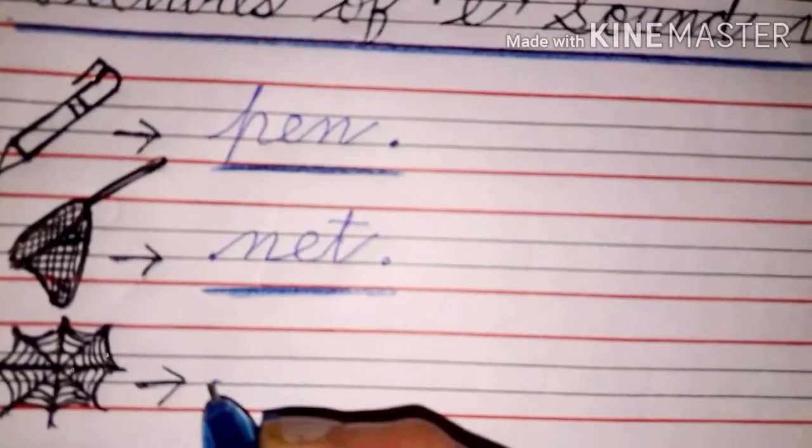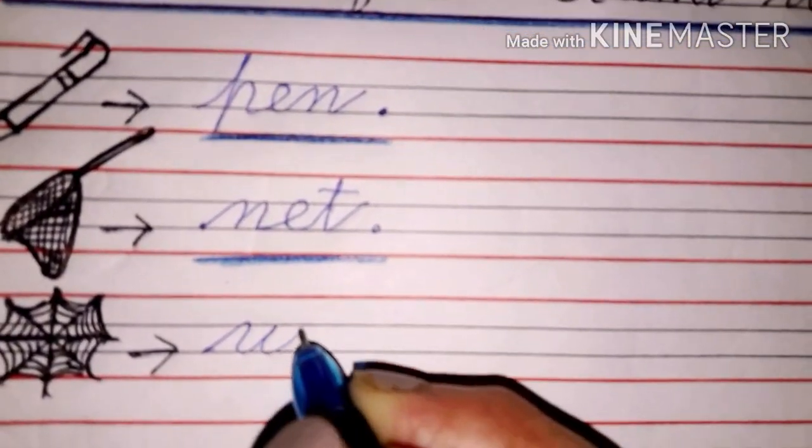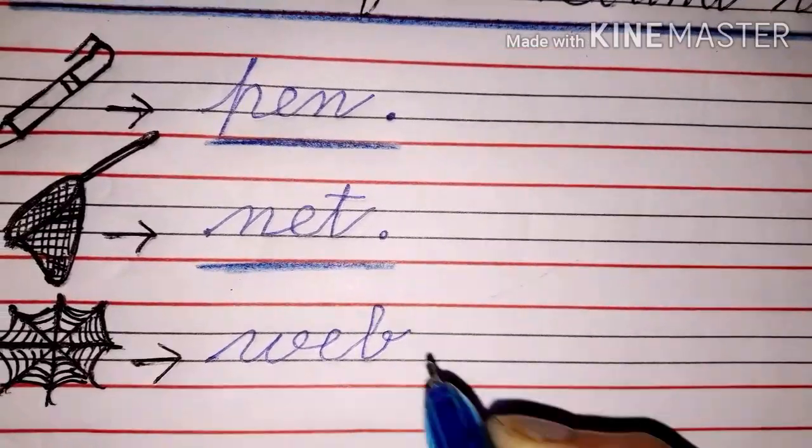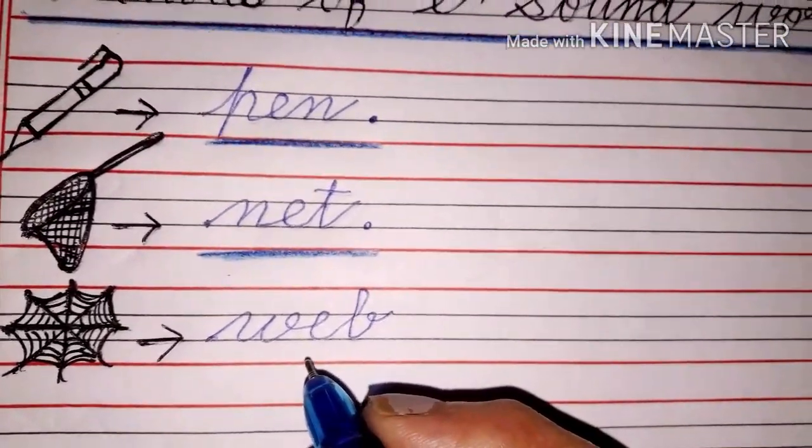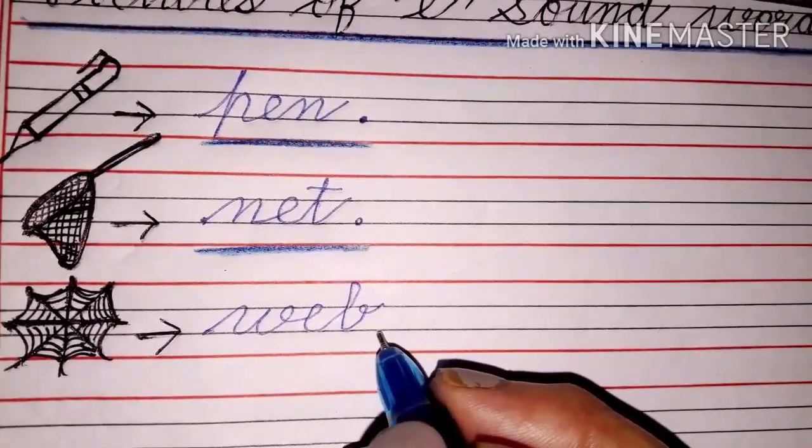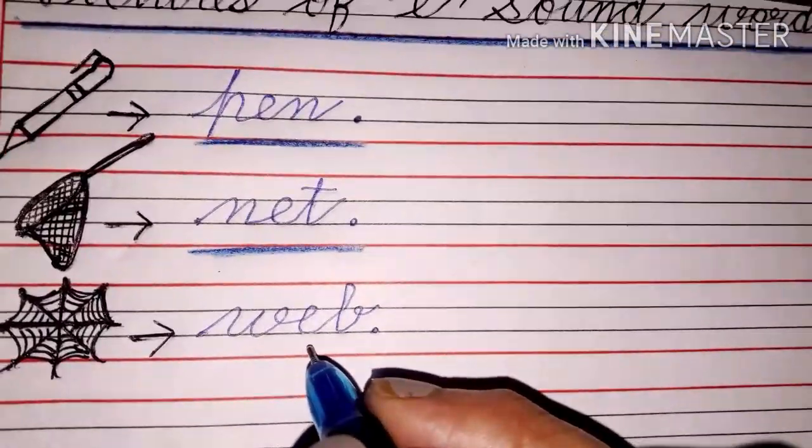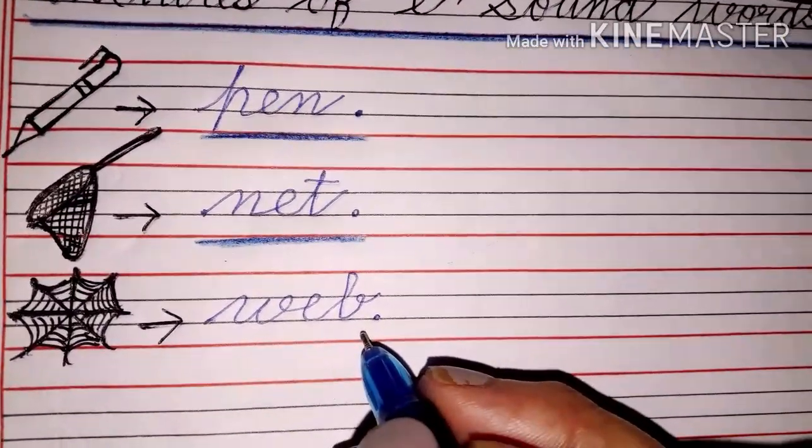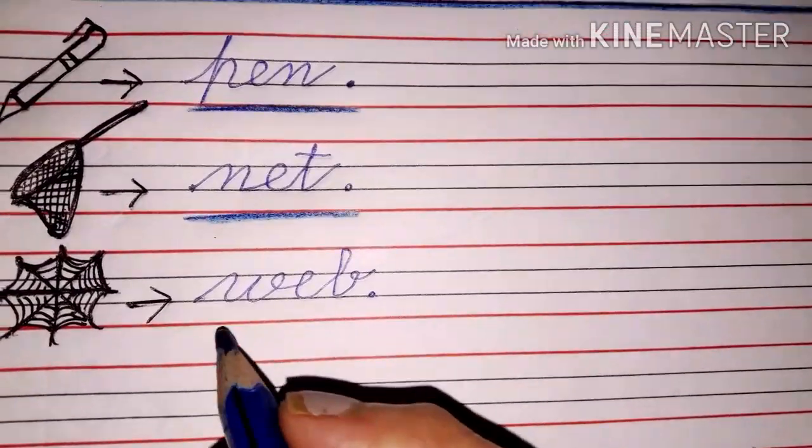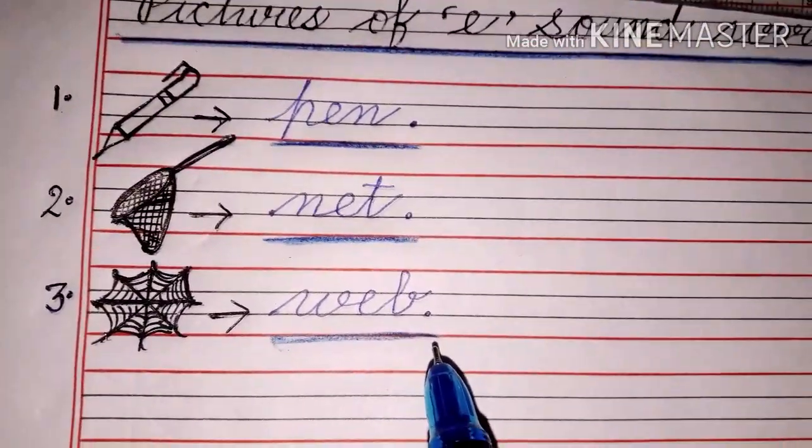So right here. W E B web. Now underline this. Write number four here.